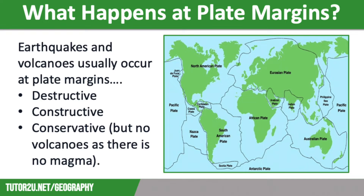Earthquakes can be found at all three plate margins. However, volcanoes only form at destructive and constructive margins. They don't form at conservative margins as there is no rising magma. We will look at these three plate margins in more detail in future videos.